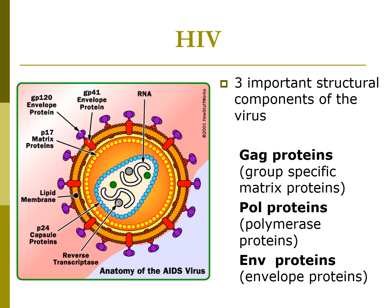There are three important structural components of the HIV viral molecule. First, the GAG proteins — group-specific matrix proteins in the core of the virus, such as P24, P7, and P25. Second, the POL proteins — polymerase proteins also in the core. Third, the envelope proteins — the ENV glycoproteins on the outer membrane, including glycoprotein 120, which links to the CD4 receptor on T-helper cells, and GP41. GAG proteins include GP24 and GP17, while POL proteins include GP134 and GP68.